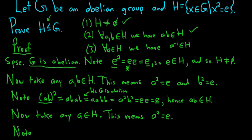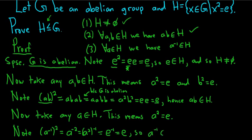Note: (a inverse) squared. You can use properties of exponents — you can multiply the two and the negative one, and you're allowed to do that with groups. This is the same thing as (a squared) to the negative one. Since a squared is equal to e, this is e to the negative one. The inverse of e is simply e. So this shows that a inverse is in H.